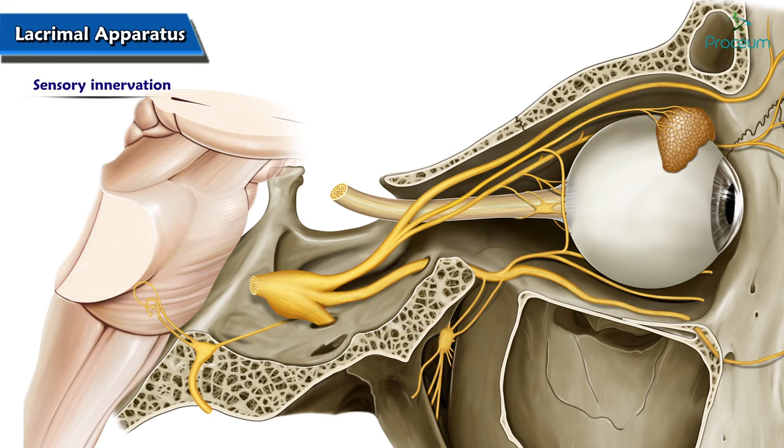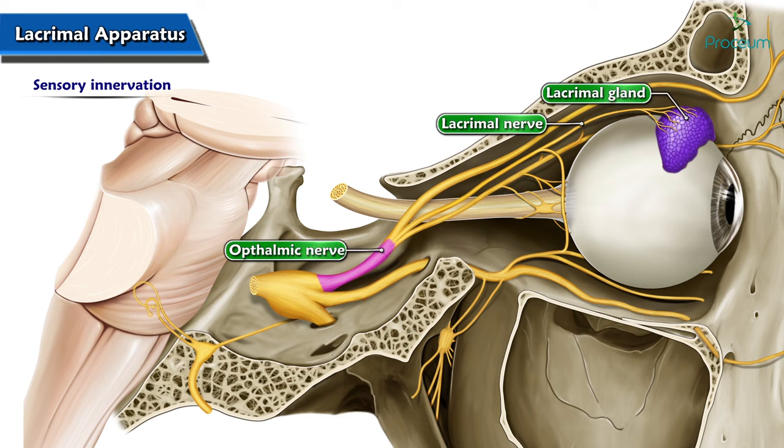Sensory innervation of the lacrimal gland is via the lacrimal nerve, which is a branch of the ophthalmic nerve.